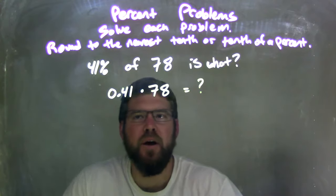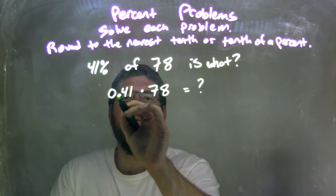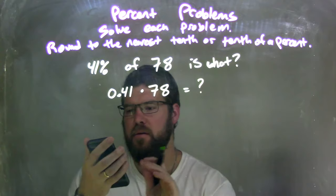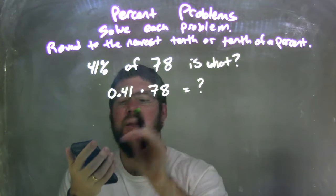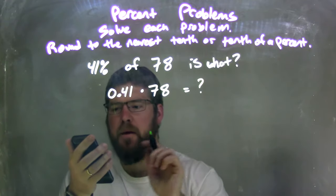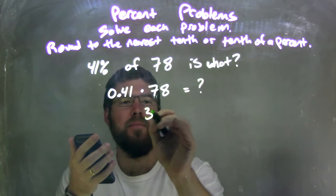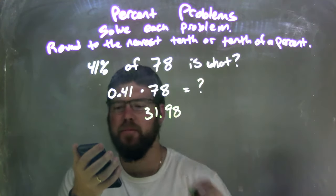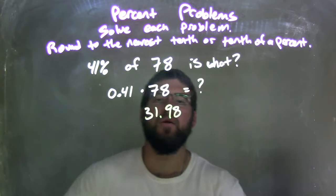So that's what we're going to try to find where I take the 0.41 and multiply it by 78. So that comes out to be 0.41 times 78, 31.98, right there. 31.98.